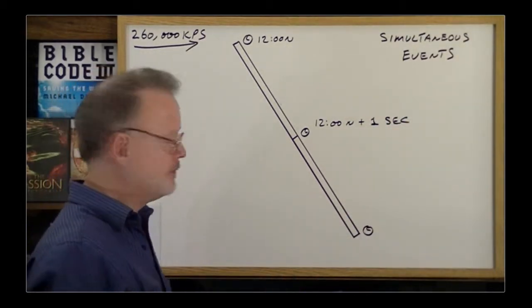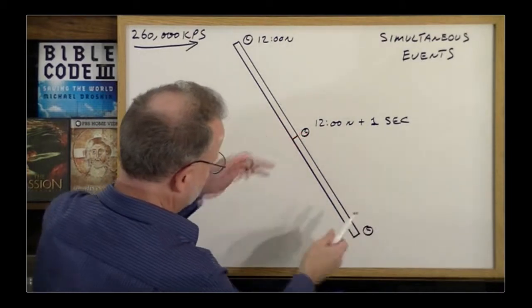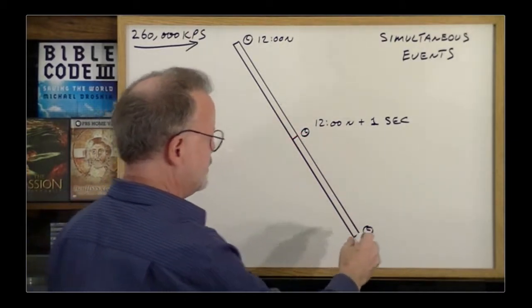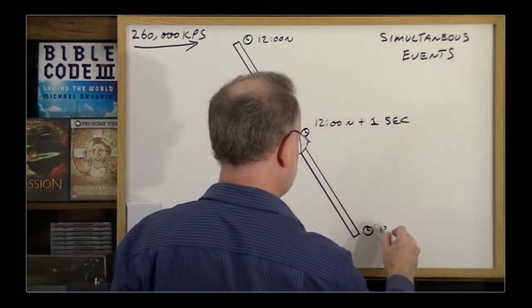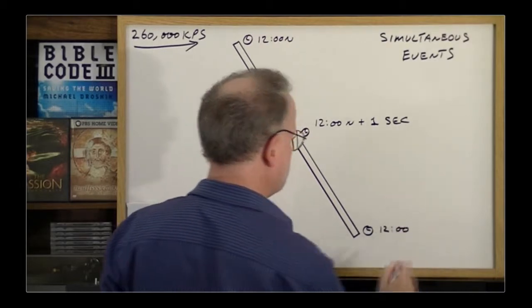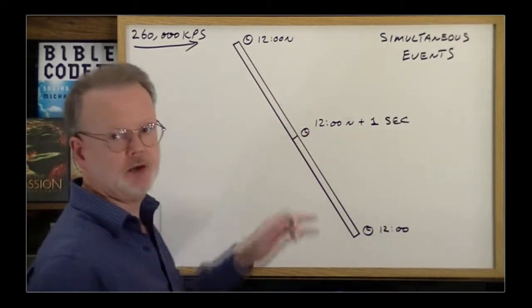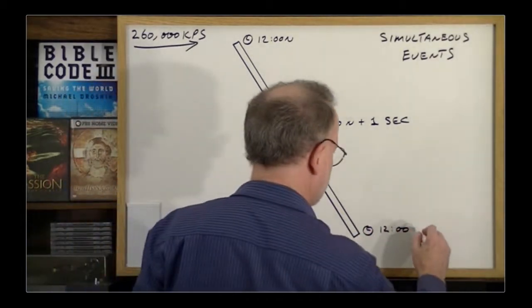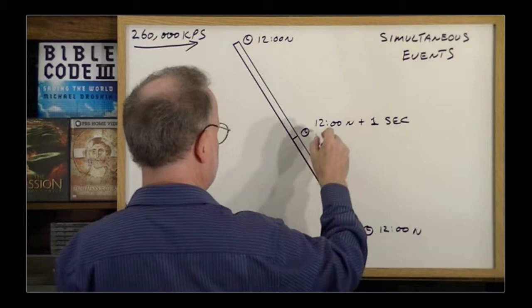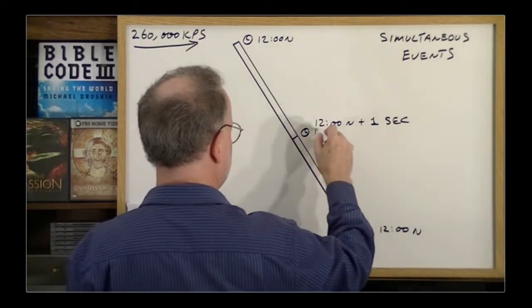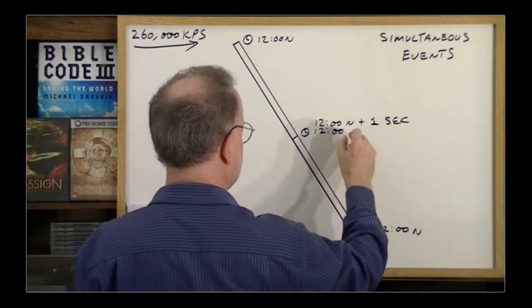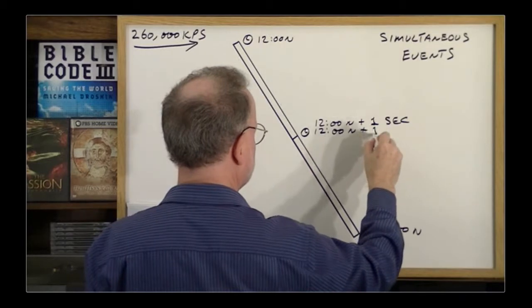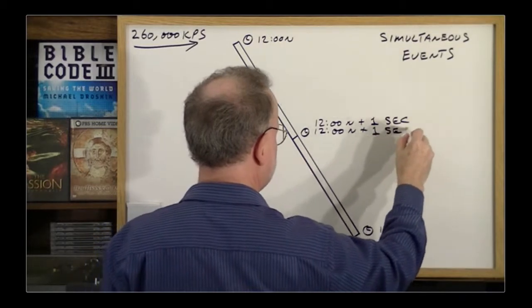the light would reach the opposite end of the spaceship when that clock said 12 o'clock noon plus one second. And in the opposite direction, look at this spaceship here, if you release a burst of light at 12 o'clock midnight, the light would reach the opposite end when that clock said 12 o'clock midnight plus one second. But we'll change it to 12 o'clock noon, and so the light would reach this other clock when the clock said 12 o'clock noon plus one second.